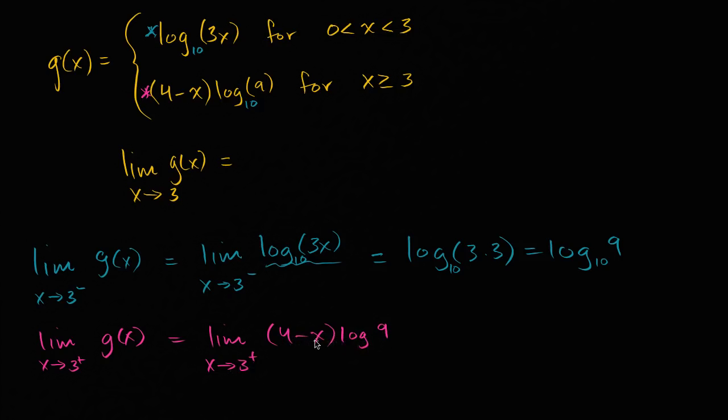And this looks like some type of a logarithm expression at first until you realize that log of nine is just a constant. Log base ten of nine is going to be some number close to one. This is just, this expression would actually define a line. For x greater than or equal to three, g of x is just a line, even though it looks a little bit complicated.